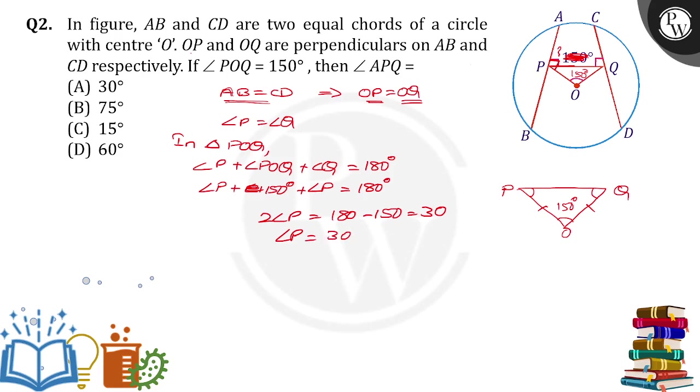So angle P equals 30 divided by 2, which is 15 degrees. Now, OP is perpendicular to AB, which means angle APO equals 90 degrees.